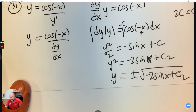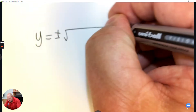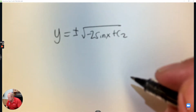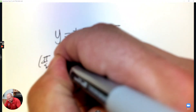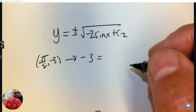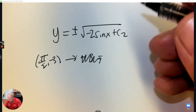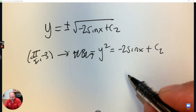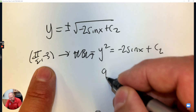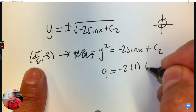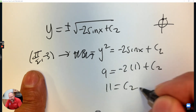It says find the particular solution through the point (pi over 2, negative 3). I like working from one step before: y squared equals negative 2 sine x plus the constant. Plug in y equals negative 3, so that makes it 9. At pi over 2, that's at the top of the unit circle, and the y-coordinate there is positive 1. Solve it — add 2 to the other side — and you have the constant, which is 11.